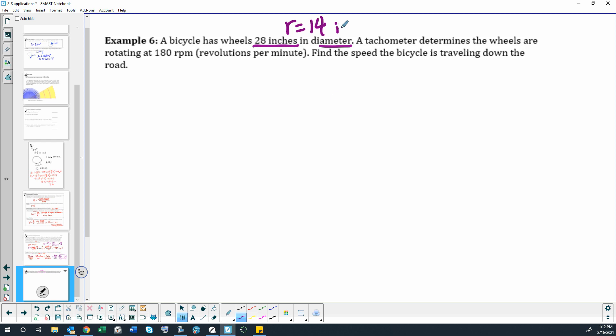So we've got a radius of 14 inches. If we're going to use the formula velocity, linear velocity equals r times angular velocity, we need to start by finding the angular velocity and we have the radius.